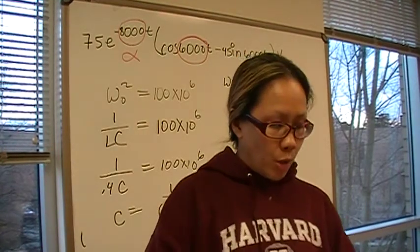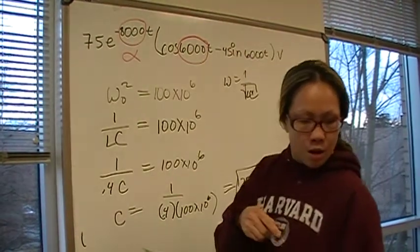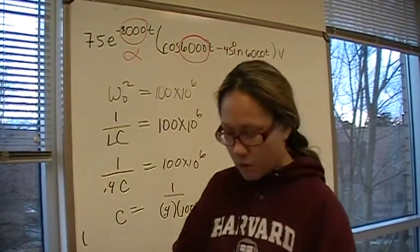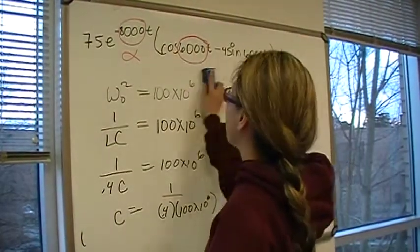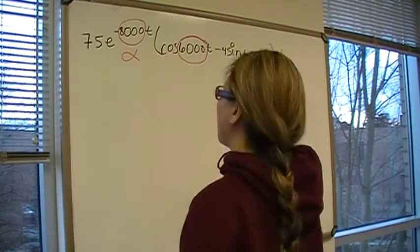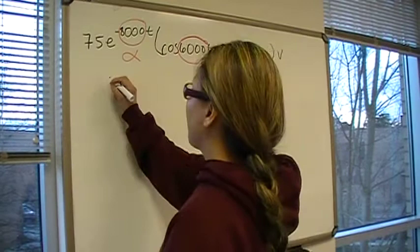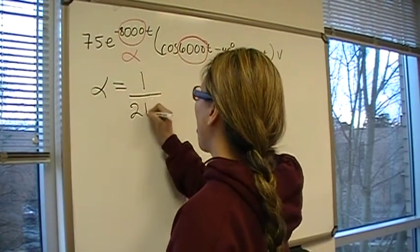Now, for part B, they are asking us to find resistance. We use the same concept. Now we know what alpha is, so that equation is going to come into play.